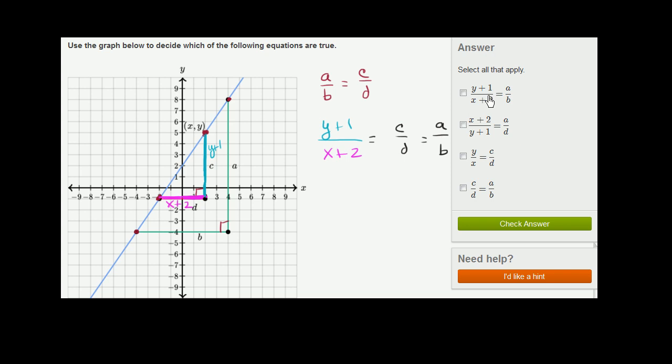Now, that's what they're saying right over here. y plus 1 over x plus 2 needs to be equal to a over b. y plus 1 over x plus 2 needs to be equal to a over b. So that one's right.